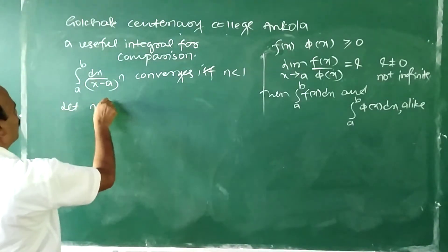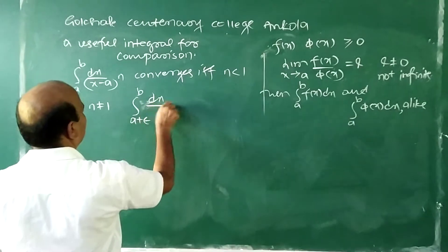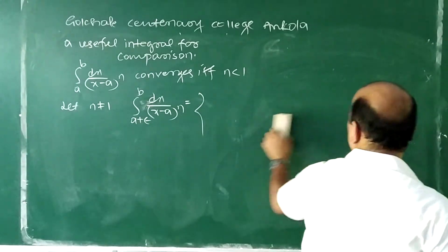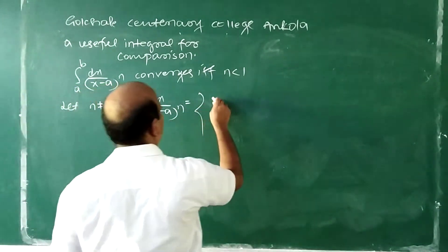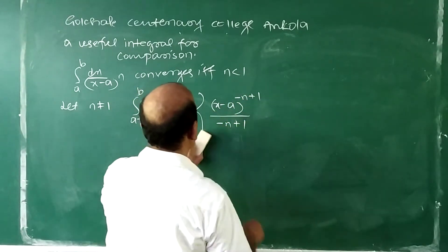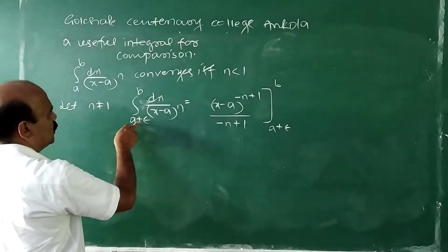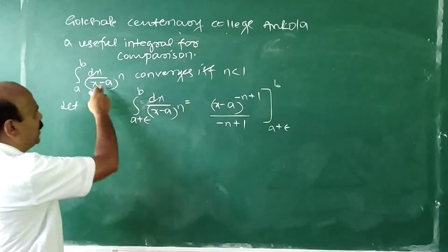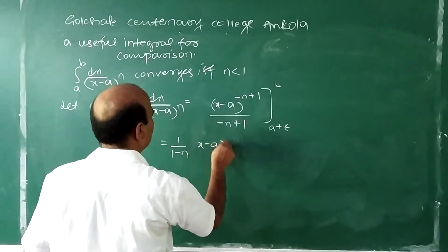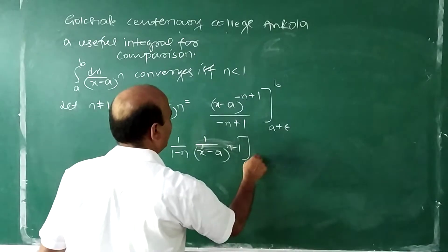First take N not equal to 1. Consider the integral from A+ε to B of dx/(x−A)^N. Integrating, we get (x−A)^(−N+1) / (−N+1), evaluated from A+ε to B. We use A+ε as the lower limit because if the limit exists as ε tends to 0, we say the integral converges at A. This gives 1/(1−N) · 1/(x−A)^(N−1), evaluated from A+ε to B.